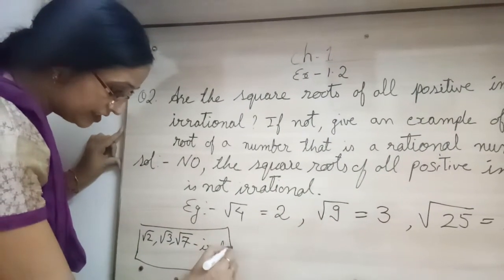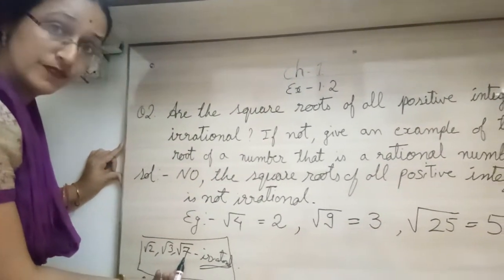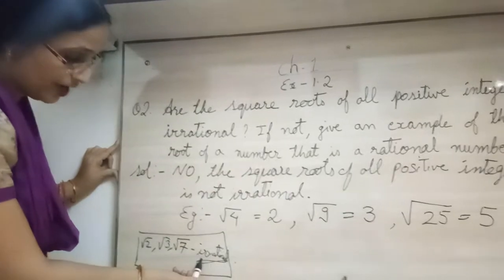These are all irrational numbers. These are our prime numbers. If I have root of a prime, then it is irrational.